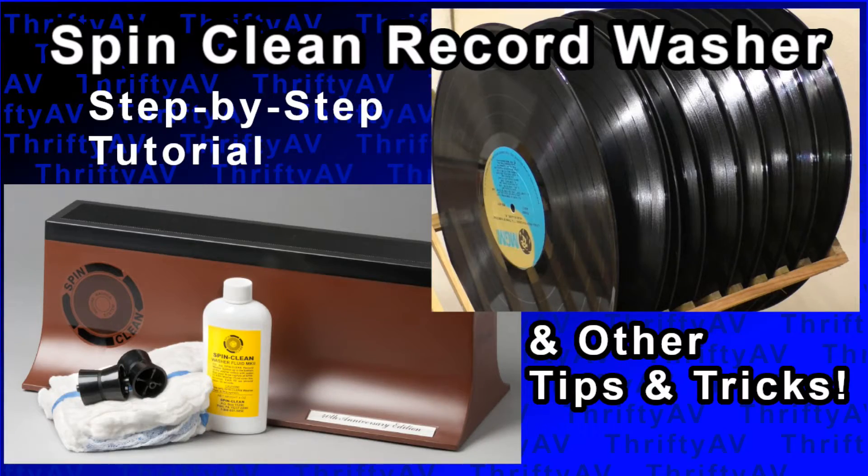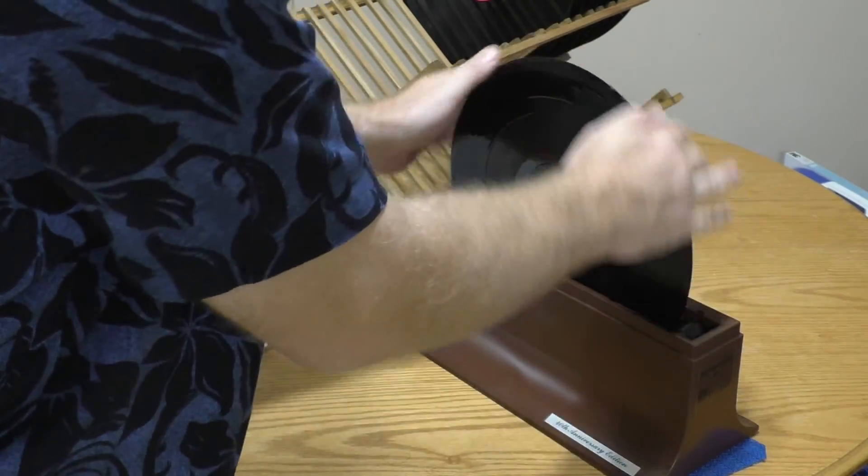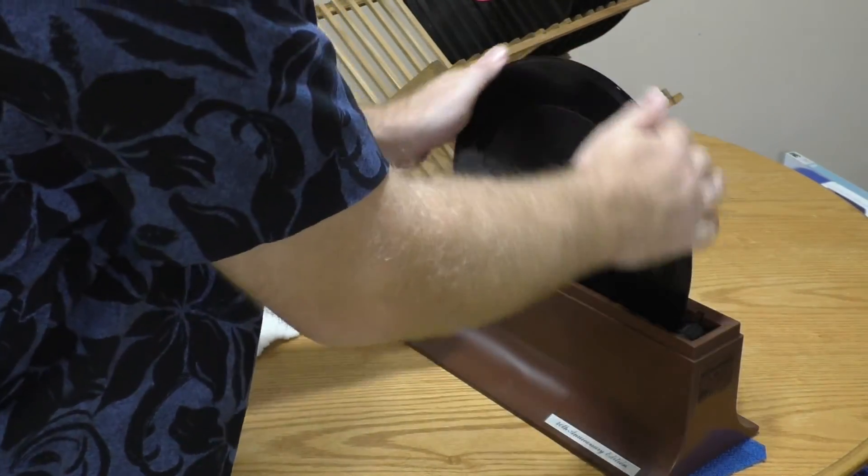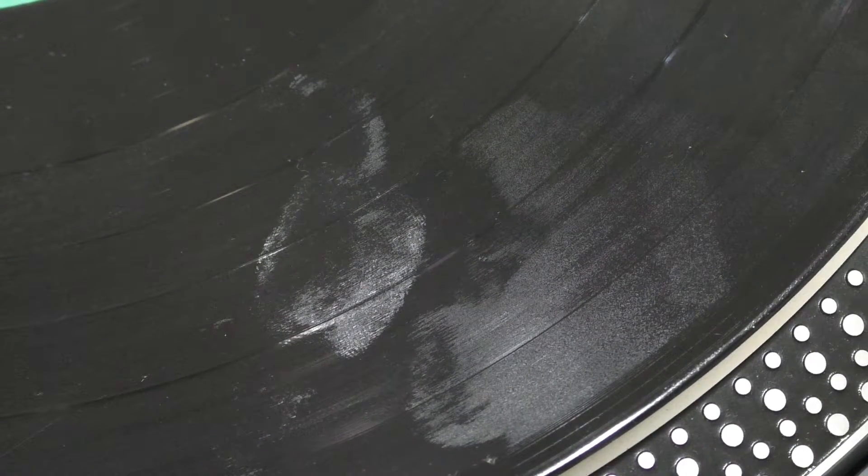In a previous video, I talked about the SpinClean Basin Cleaner. Having a wet cleaning device is important for removing not only dirt that's embedded in the grooves, but also grease from fingerprints and other sources. Click the card above to see the full video. The link is also in the description.